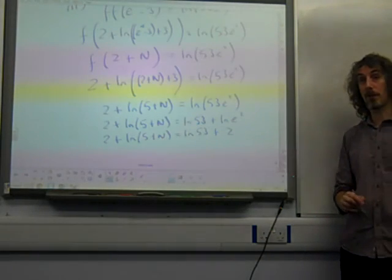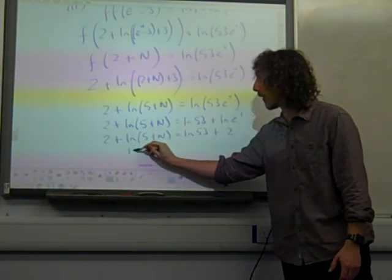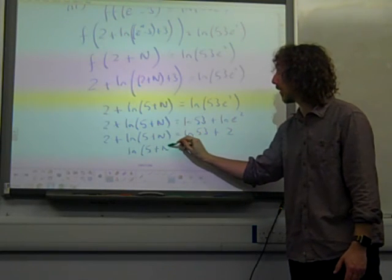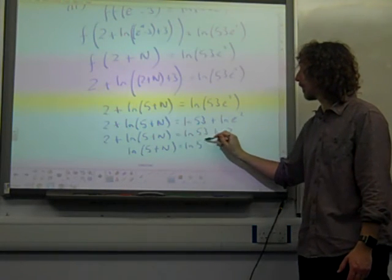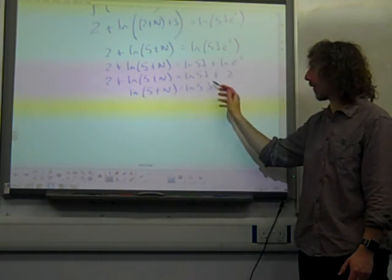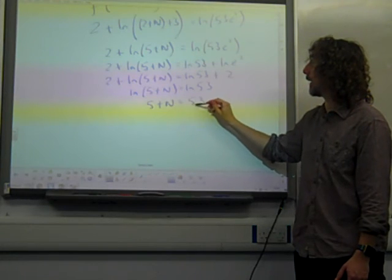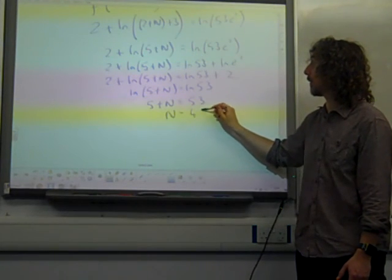2 plus ln 5 plus n is ln 53 plus 2. Well that's brilliant, because we've now got 2 on both sides of the equation. So we could subtract 2 from both sides. We've now got natural log of something equals natural log of something. So 5 plus n must be equal to 53. So n must be equal to 48.